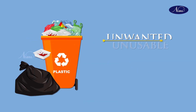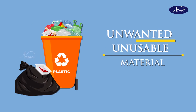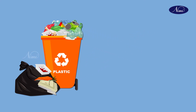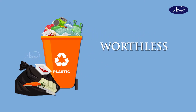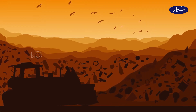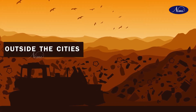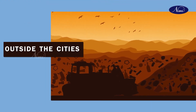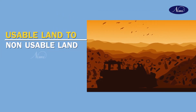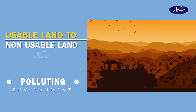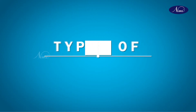Waste are unwanted or unusable materials. Waste is any substance which is discarded after primary use, or it is worthless, defective, and of no use. Usually this waste is thrown in areas outside the cities, but this open disposal decreases usable land into non-usable land and also pollutes the environment. Let us now look at the types of waste material one by one.